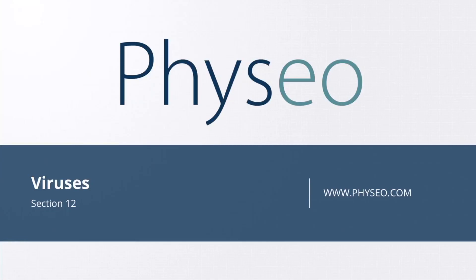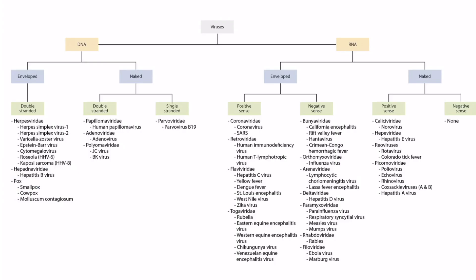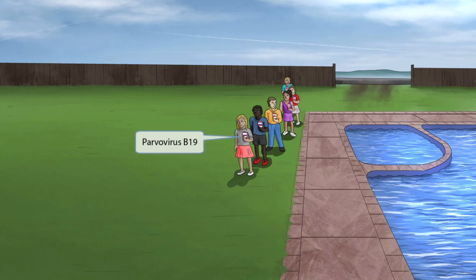Welcome to section 12 of viruses. This is our virus overview figure, and in this video we'll be discussing parvovirus B19, which you can see right here. This scene will take place at a pool party. All of these kids were invited to the party, and parfaits were handed out to all in attendance. Parfait sounds like parvovirus, which should help you remember that this image is all about parvovirus B19.